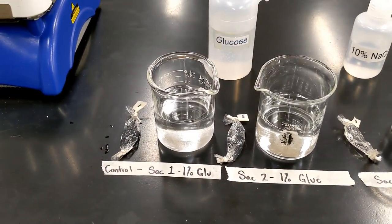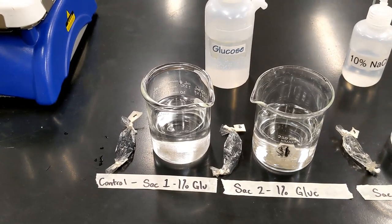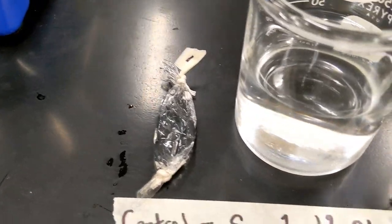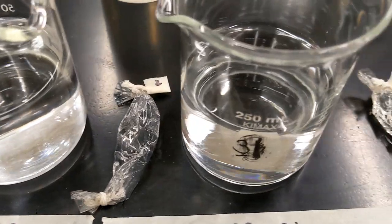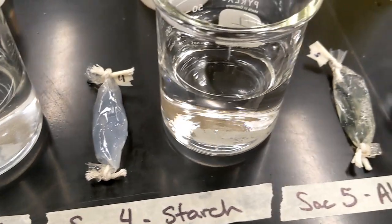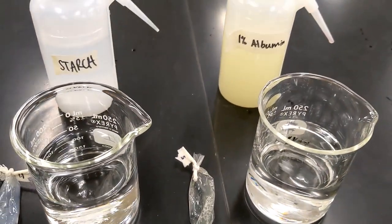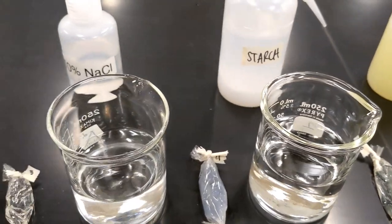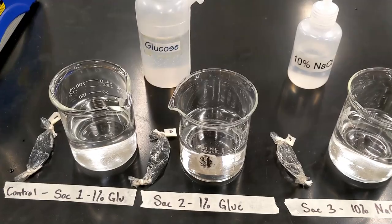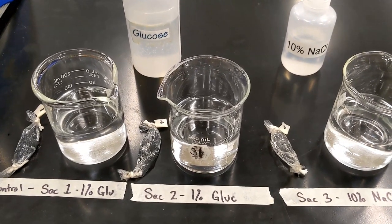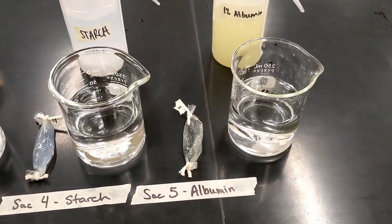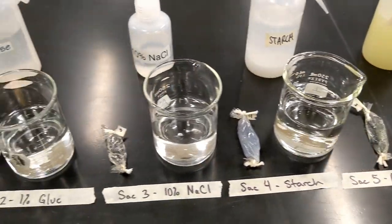We also have five different dialysis bags or sacks, and each of these dialysis bags contains a specific solution as well. If you look through your lab handout, you will see beaker one contains one percent glucose, beaker two contains distilled water, and beakers three, four, and five also contain distilled water.